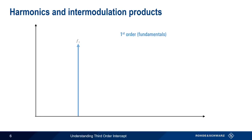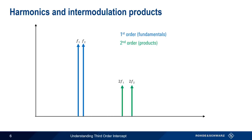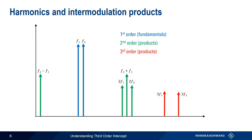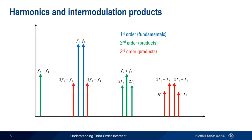The two fundamental or first order tones can create a very large number of harmonics and intermodulation products. Second order products include the two second harmonics, 2F1 and 2F2, as well as the basic sum and difference signals, F2 plus F1 and F2 minus F1. When it comes to third order products, we have the third harmonics of the fundamentals, 3F1 and 3F2, and then the four additional third order products: 2F1 plus F2, 2F2 plus F1, 2F1 minus F2, and 2F2 minus F1. These last two products are the most important.